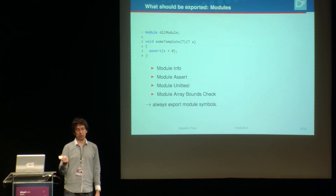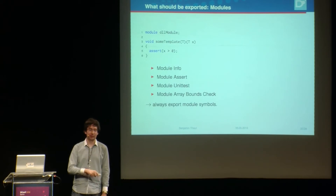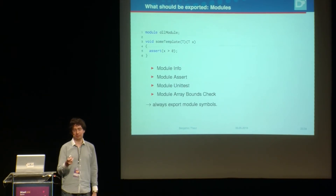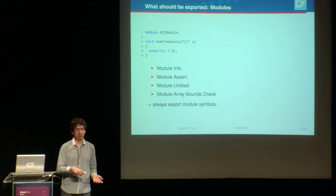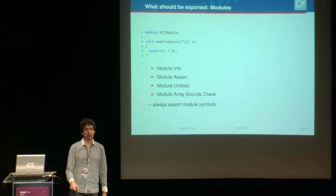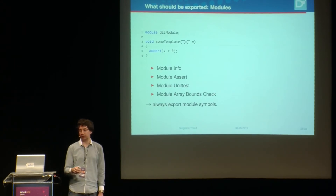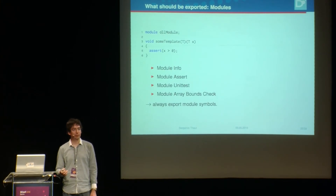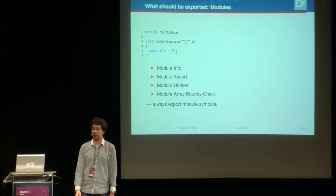If you have a DLL containing that module and the user instantiates the template, the instantiation ends up in the user's executable. The `assert` inside the template calls a compiler-generated per-module assert function. If we don't export that module-assert function, you get an unresolved symbol error. There are all kinds of other compiler-internal symbols we have to export: module info, module unit test function, module array-bounds-check function. So currently, if a module is part of a DLL, I always export all compiler-internal symbols regardless.